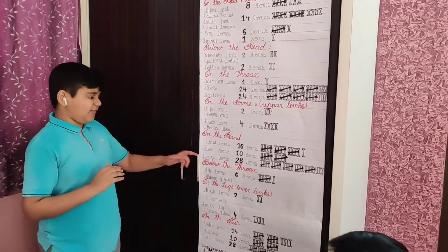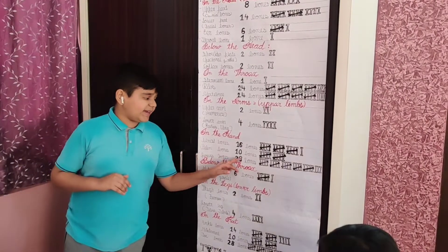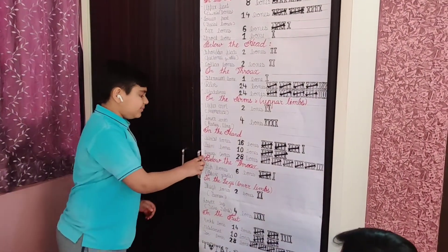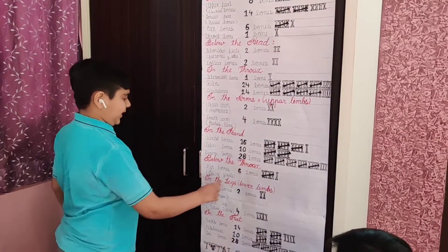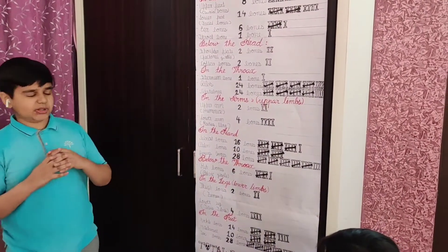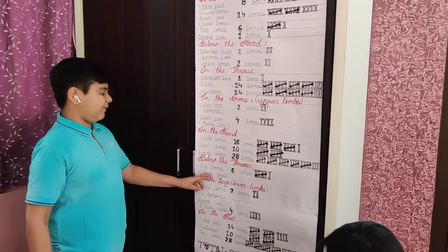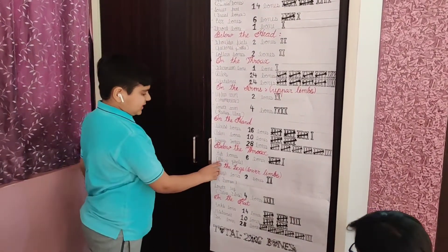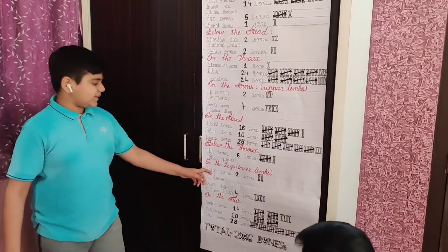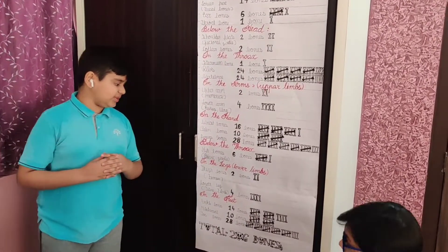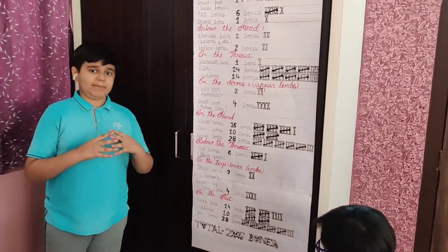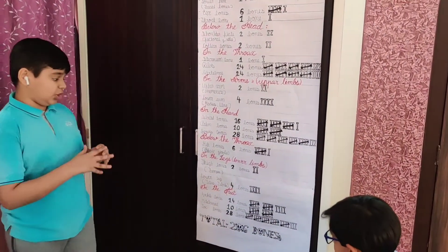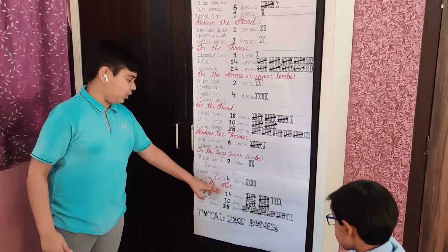The palm has 10 bones and fingers have 28 bones. Now bones below the thorax: hip bones have 6 bones, also known as the pelvic girdle. In the legs, thigh bones have 2 bones, also known as the femur.